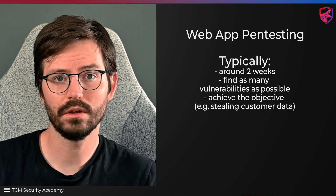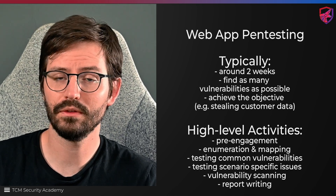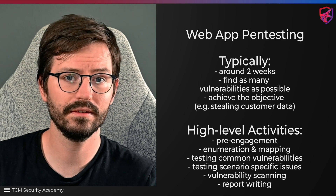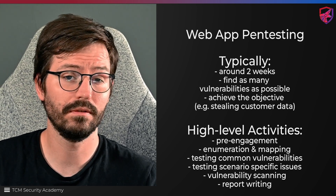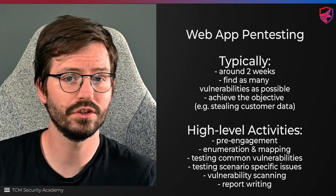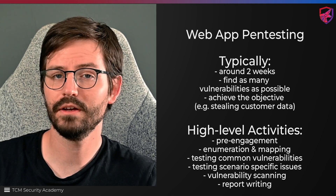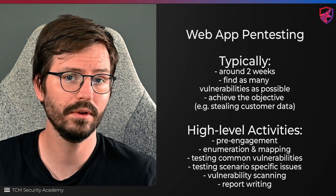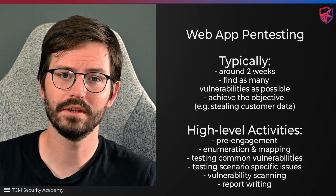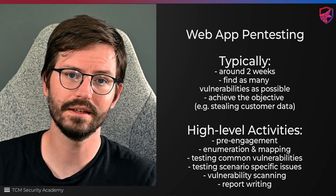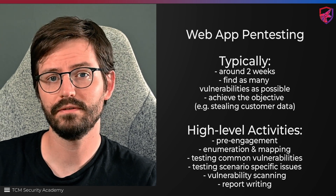Your typical activities will look like pre-engagement — figuring out the scope and the timing of your pen test, mapping out the application and carrying out a lot of enumeration, working through the application logic and features, identifying risky functionality and finding potentially hidden endpoints, and of course testing common attacks against everything that you find. You write up a report of the findings at the end and provide recommendations. Your tests will likely include some scanning tools and occasionally code review as well.